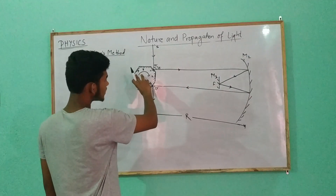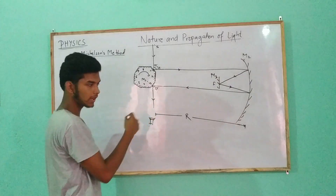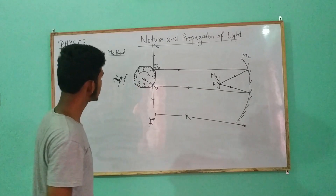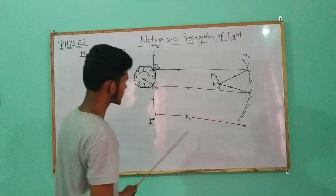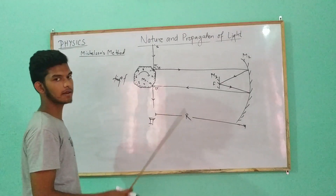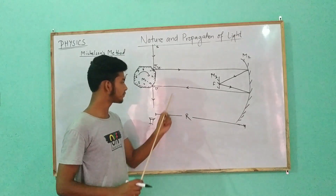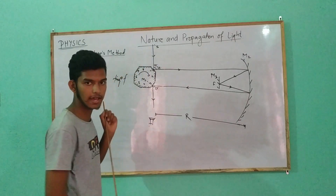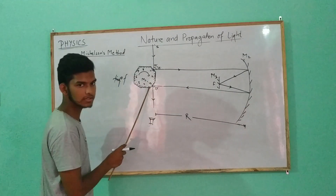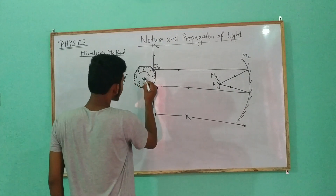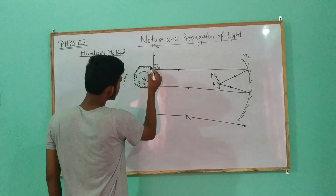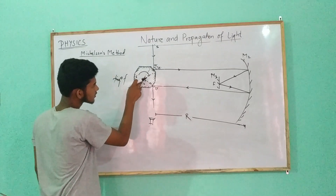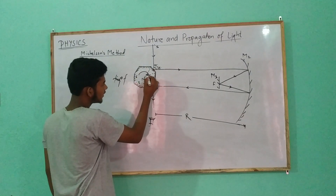This rotating mirror has a frequency — this is the frequency of the rotating mirror. This distance is R. Now we have to use the focus method: put the center pole and keep the rotating mirror rotating at this angle. The center angle is theta.